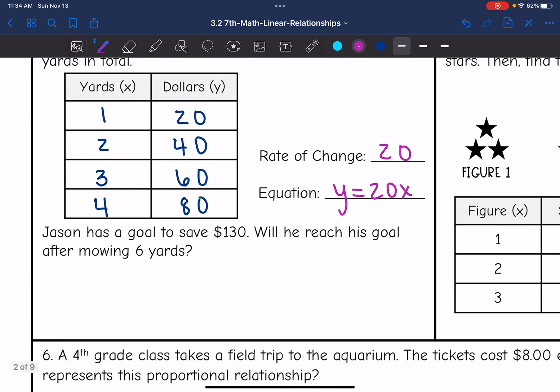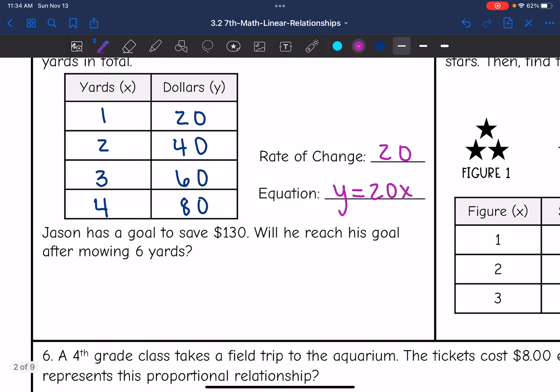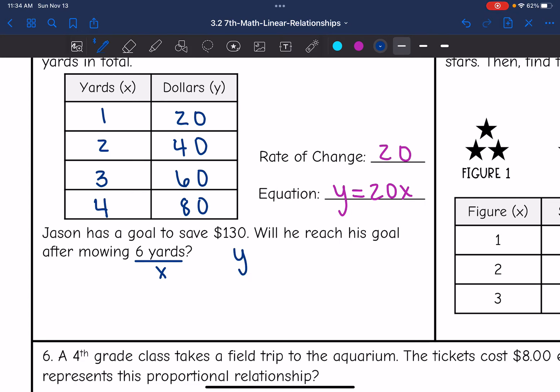Let's look at this question. Jason has a goal to save $130. Will he reach his goal after mowing 6 yards? So 6 yards would be x. I'm going to replace x in my equation with 6 and see what his total y will be. So it'll be y equals 20 times 6. That means after 6 yards, Jason would have 20 times 6, which is $120. So will he reach his goal after mowing 6 yards? No, he will only have $120, so he would be $10 short.